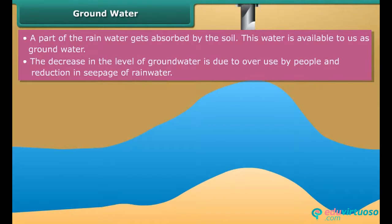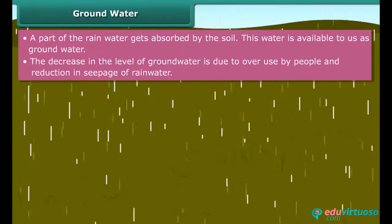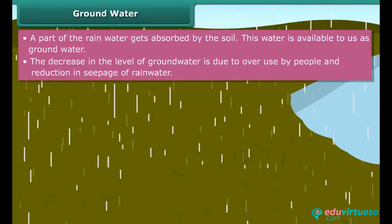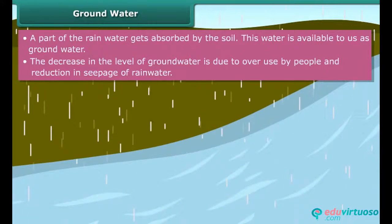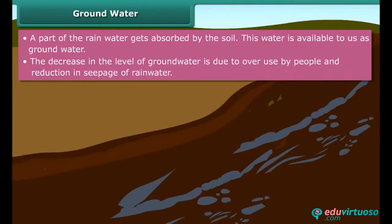However, overuse of groundwater has led to its depletion. As a result, we need to dig deeper and deeper to locate groundwater. In areas with little or no vegetation, the topsoil is loose and gets washed away by rainwater. Such areas get covered with concrete, and as a result there is reduced seepage of rainwater into the ground.